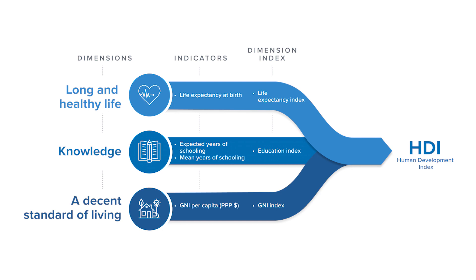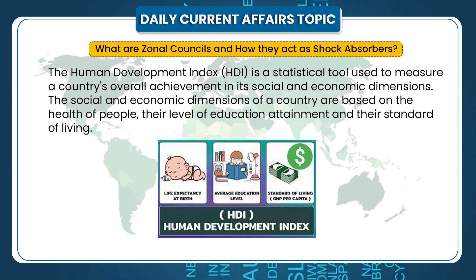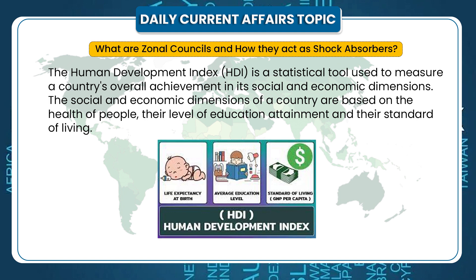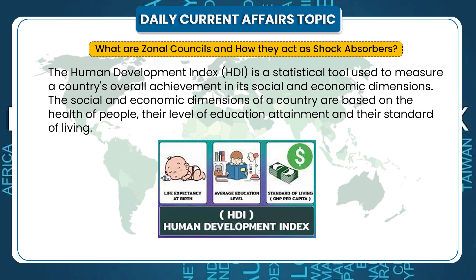The Human Development Index is a statistical tool used to measure a country's overall achievement in its social and economic dimensions. The social and economic dimensions of a country are based on the health of the people, their level of education attained, and their standard of living. It is a measure of a country's average achievements in three dimensions of human development.